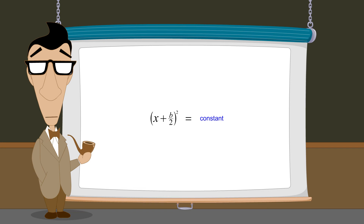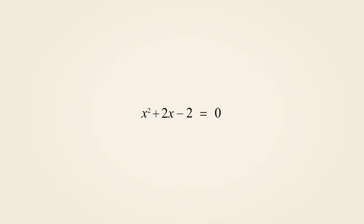The values of x can then be found by taking the square root of both sides of the equation. So let's try an example using this technique to solve the quadratic equation x-squared plus 2x minus 2 equals zero. These solutions can be found by completing the square. In this quadratic expression, the x-coefficient b is 2 and the constant term c is negative 2. The first step is to move the constant term c to the right side by subtracting it from both sides.